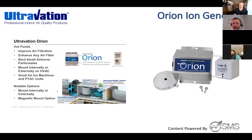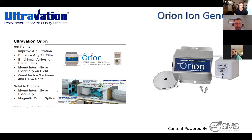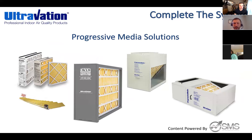The Orion Ion Generator is your filter enhancer. It electrically charges particles, allowing them to be caught in your air filter. When you want to go all out and make your system top of the line, mount this before your filter, then mount UVC lamps over the coils, and put either the Solaris or the Catalyst in the airstream. This is also great for ice machines and PTAC units as well.